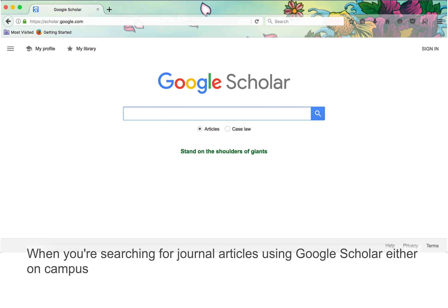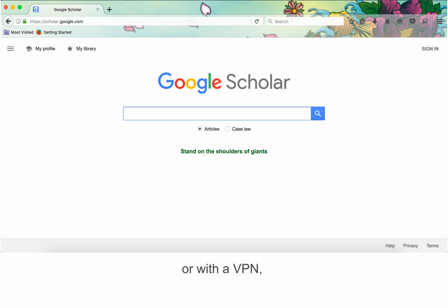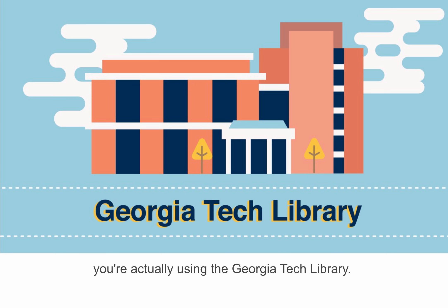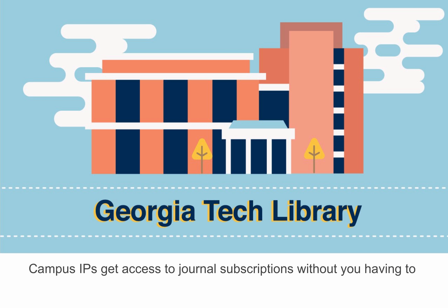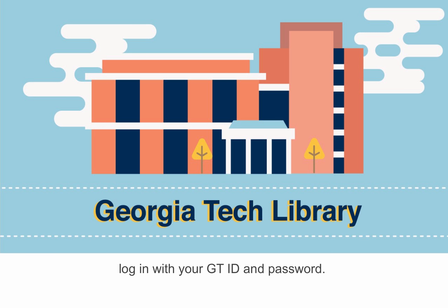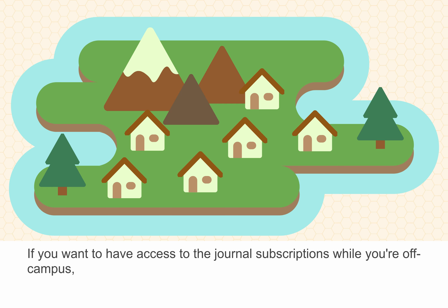When you're searching for journal articles using Google Scholar, either on campus or with a VPN, you're actually using the Georgia Tech Library. Campus IPs get access to the journal subscriptions without you having to log in with your GTID and password.